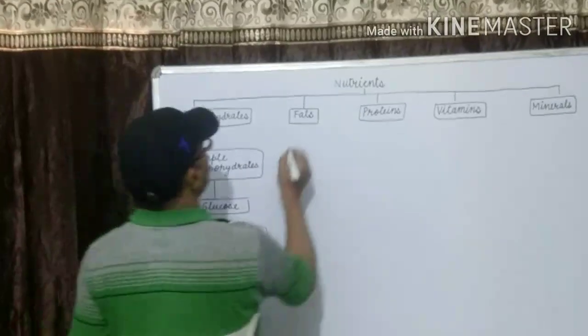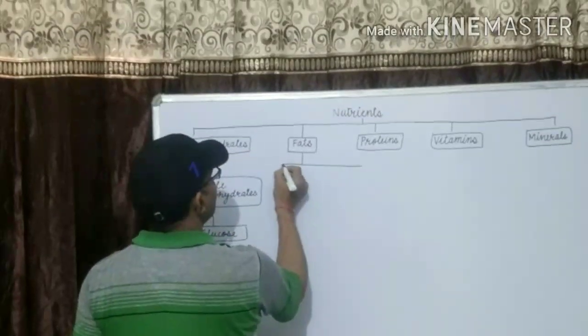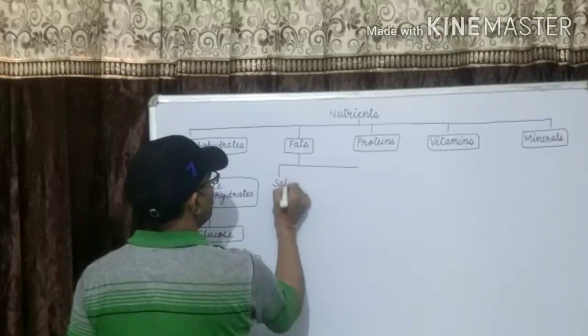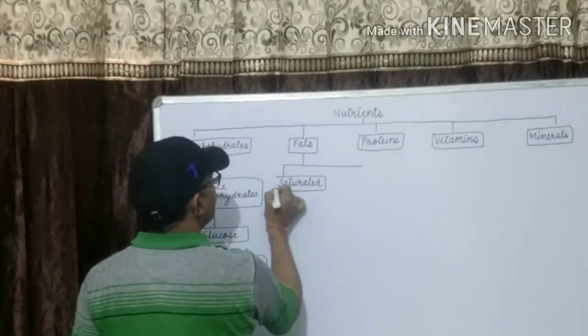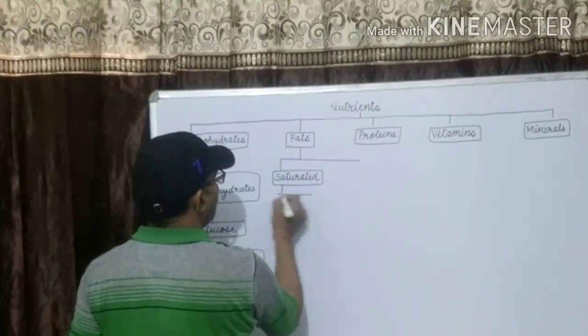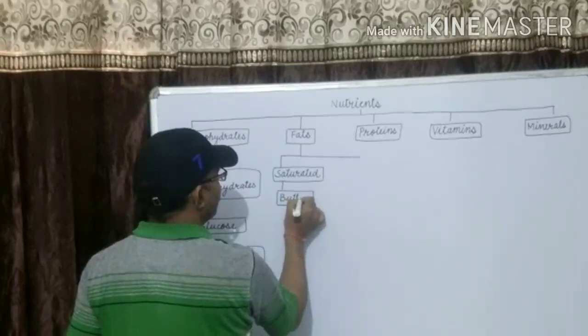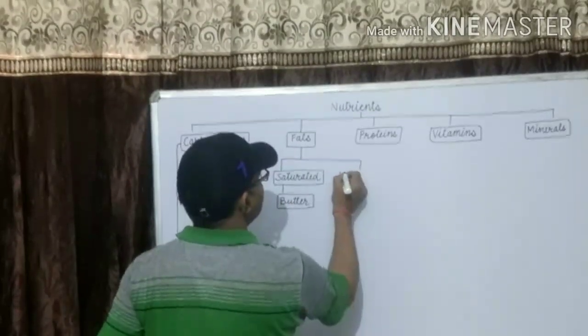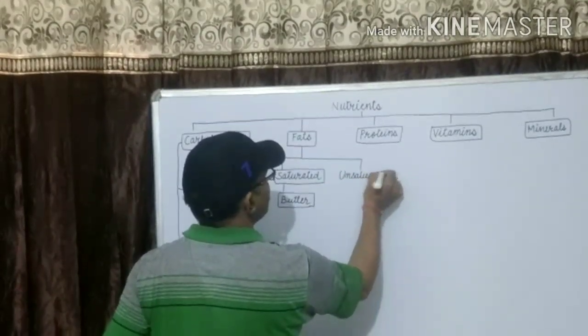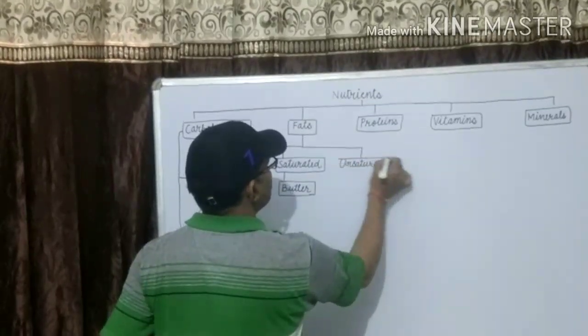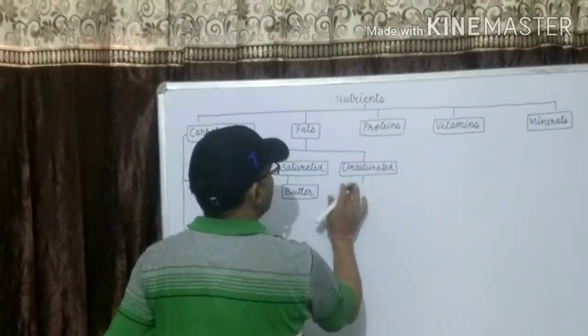Fats are two types: saturated, example butter, second is unsaturated, example vegetable oil.